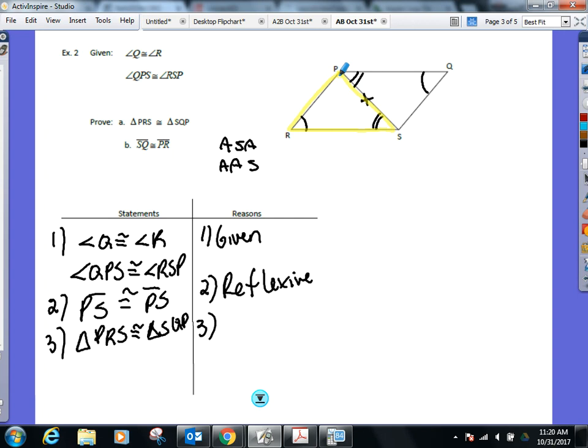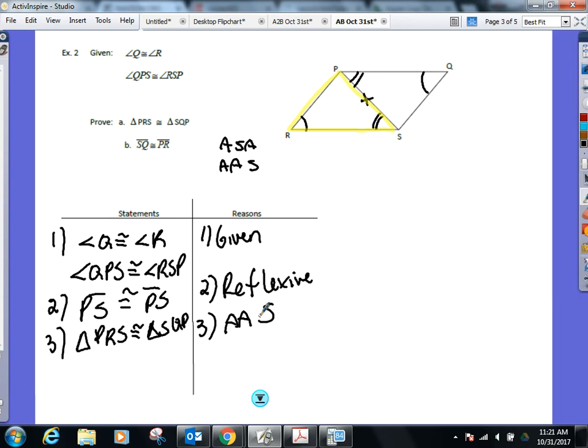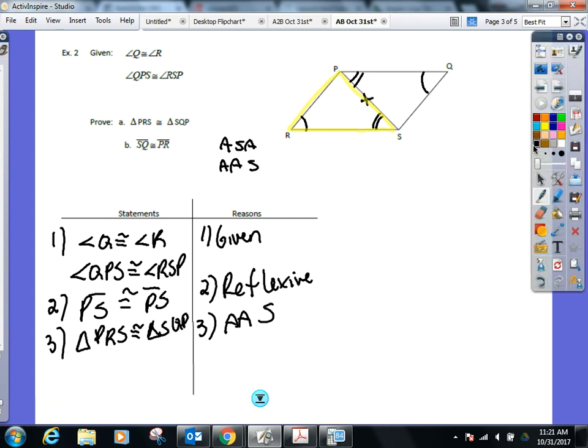When you tell if it's in between or not, you have to go using a single triangle. Don't look at both. You have to look at a single triangle, because I don't want you guys to think, oh, hey, look, that side right here is in between these two angles here. No, no, no, no, no. You've got to take a single triangle. So let's take this one I've highlighted, PRS. Is that side in between the two angles? Absolutely not. So that will be now angle, angle, side. You've got to take it from a single triangle to determine if the side's in between.